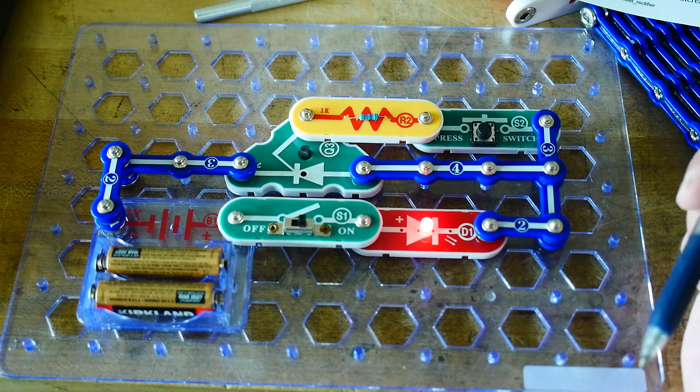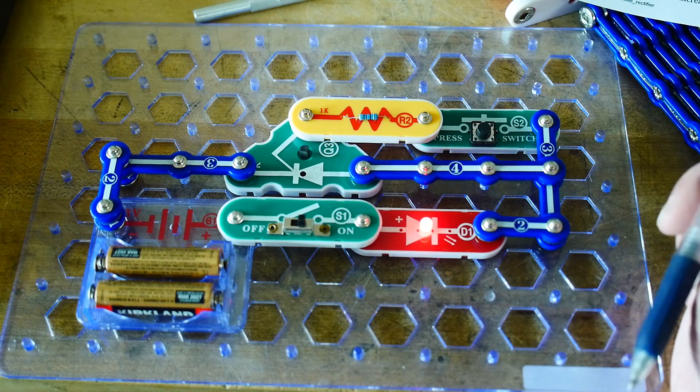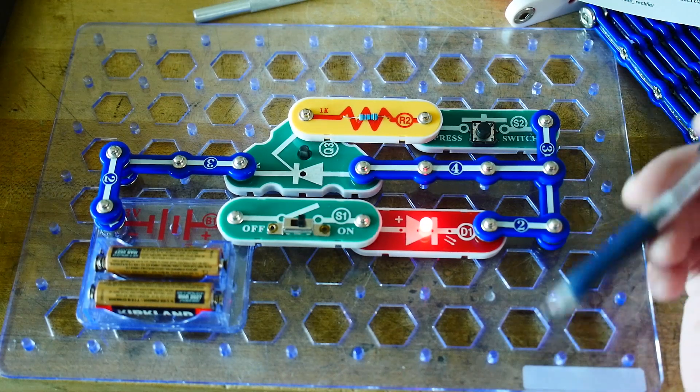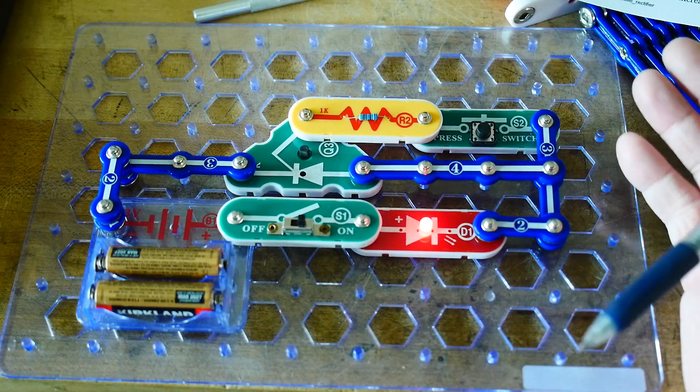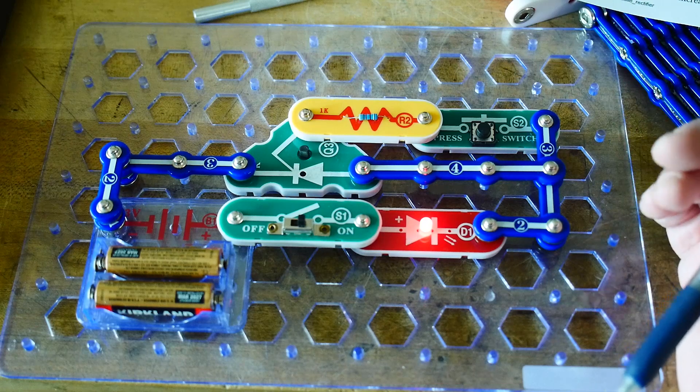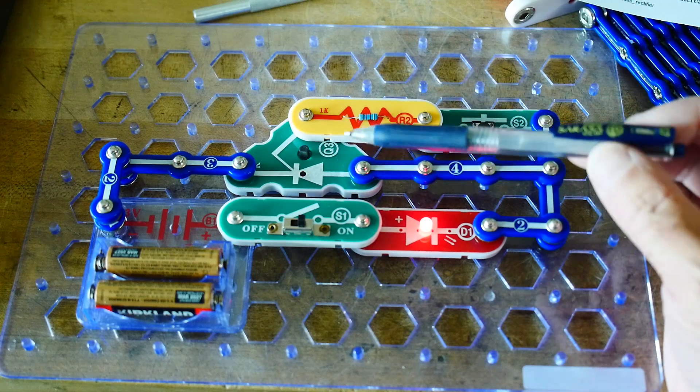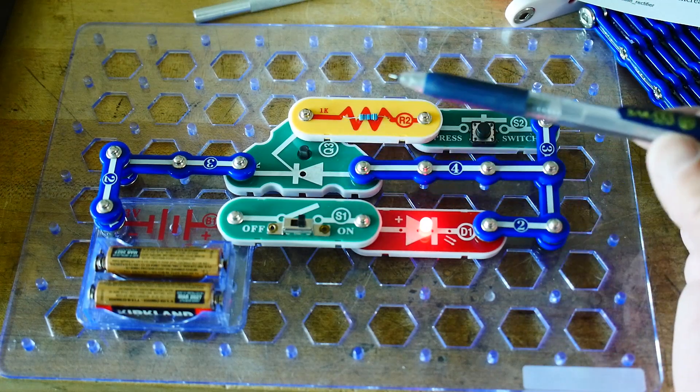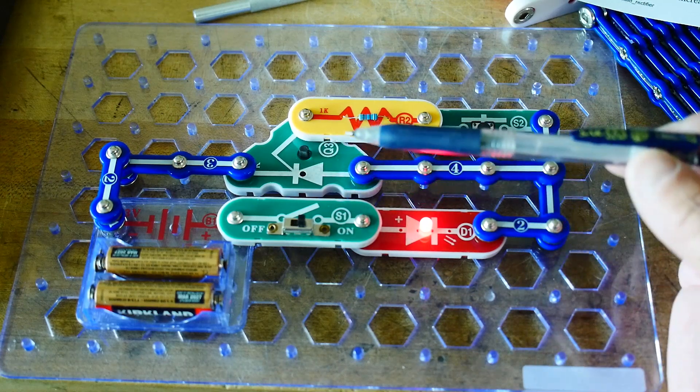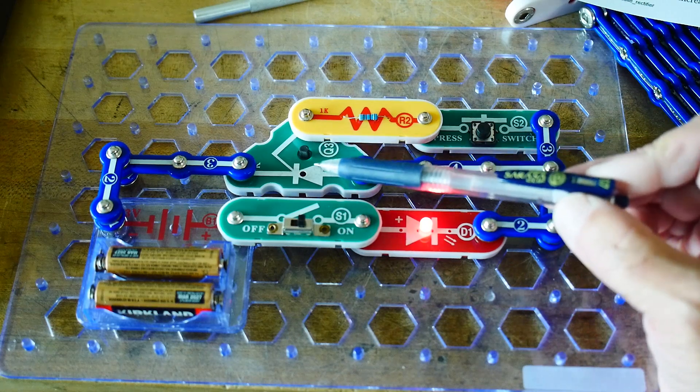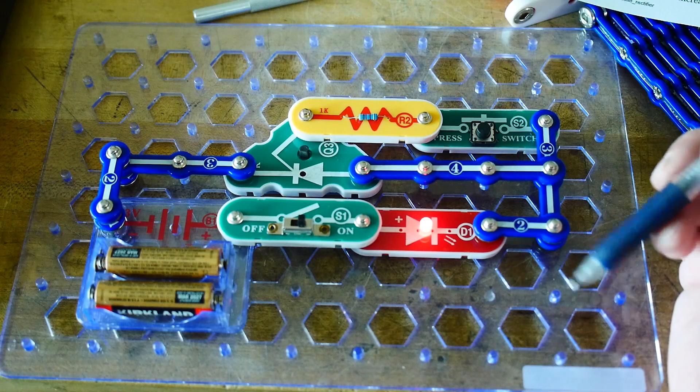You don't see a lot of them. A lot of times you'll find them in power supplies as a crowbar circuit. So if something gets too high of a voltage, the SCR will fire and it will crowbar the circuit and stop the power supply from doing anything bad to your circuit. You'll see it in that. A lot of times you'll see a variant of the SCR, which is called the TRIAC. The SCR only lets DC pass. The TRIAC allows AC to pass. So a lot of times you'll see it in motor controllers, dimming circuits for lighting, and things like that.